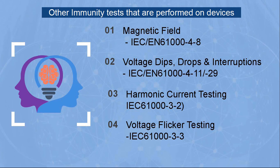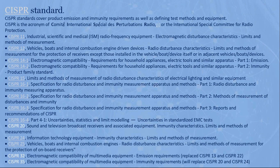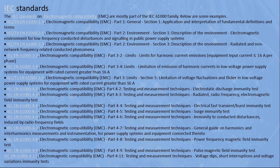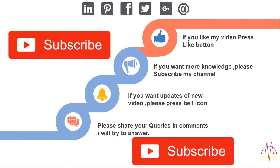Looking at the standards: CISPR standards are widely applicable in India — CISPR 11 for industrial, CISPR 12 for vehicles, CISPR 14 for household appliances, and CISPR 15 for lighting, and so on. You can refer to the PDF linked in the description below. For European standards, there are two categories: one for electrical emission and one for immunity to electrical emission. There is also the universal IEC standard, which is widely accepted. For more videos please subscribe to my channel and click the bell icon, and write your comments below. Thank you.